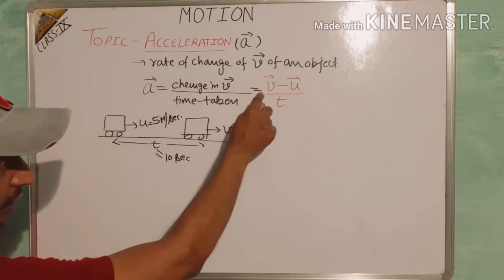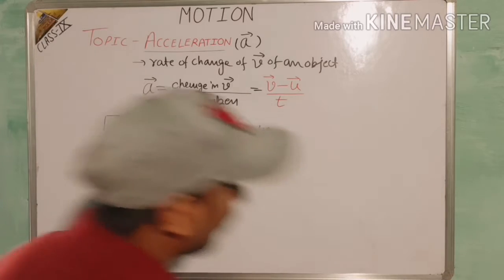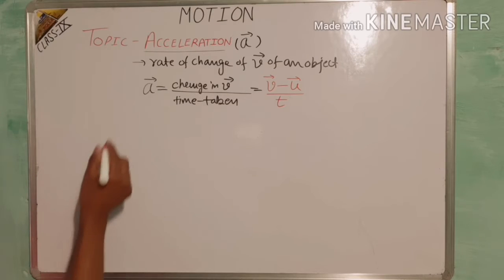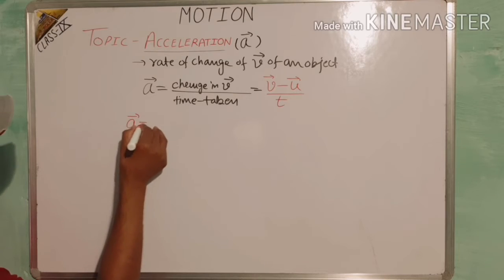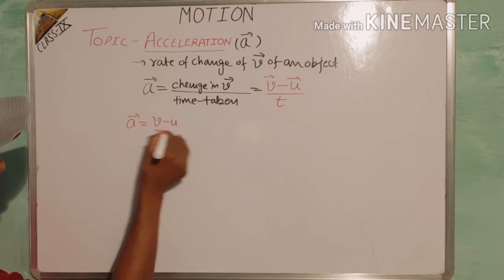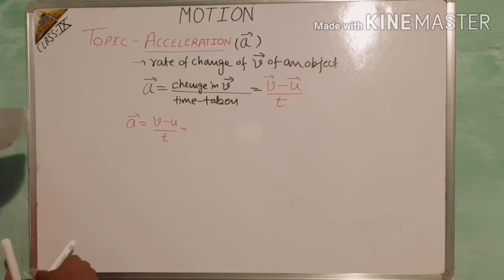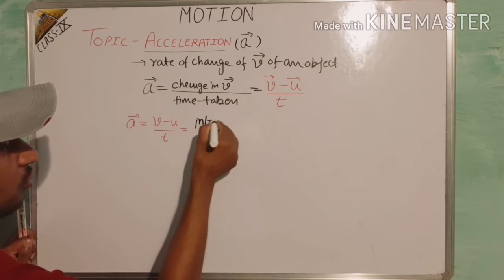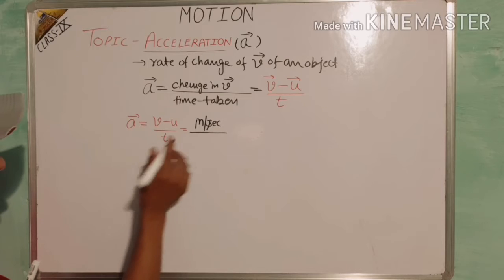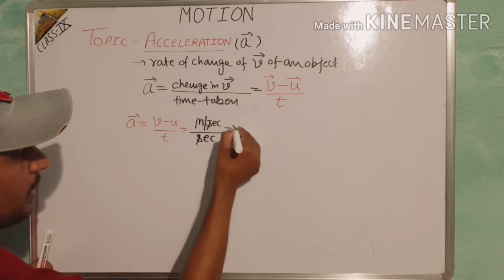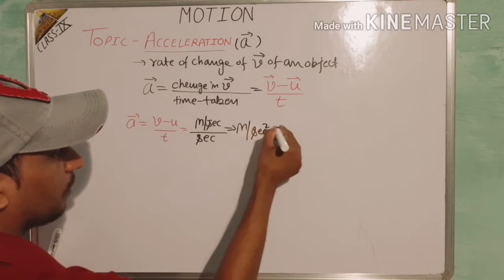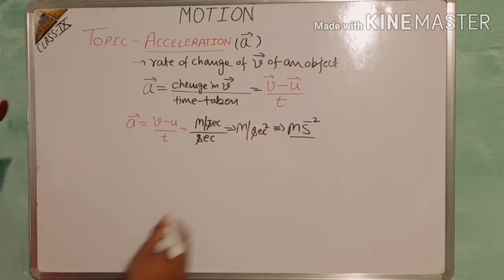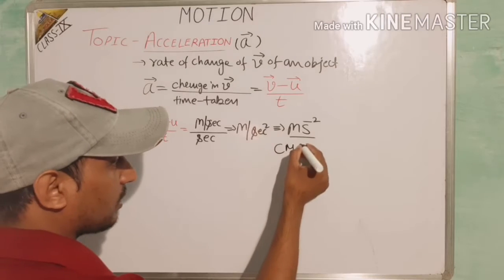The formula for acceleration is: acceleration equals final velocity minus initial velocity divided by time. To find the unit of acceleration: velocity has the unit meter per second, and time has the unit second. Combining these, the unit of acceleration is meter per second square (m/s²), also written as meter per second square inverse. Sometimes acceleration is also expressed in the smaller unit centimeter per second square.